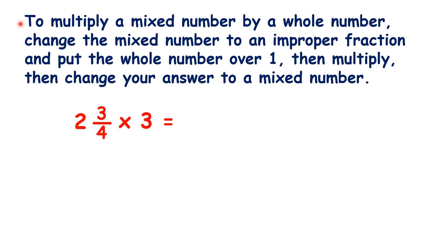Now to multiply a mixed number by a whole number, you change the mixed number to an improper fraction, put the whole number over one, then multiply, then change your answer to a mixed number. There are a lot of steps in that, so let's break it down with an example.